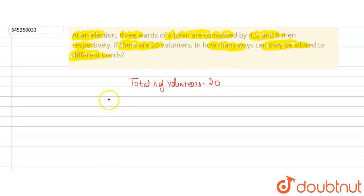By assigning four volunteers from 20 volunteers, we'll be left with 20 minus 4 equals 16 volunteers. From 16 volunteers, we have to select five volunteers for ward two, so we'll get 16C5.